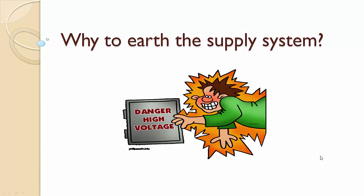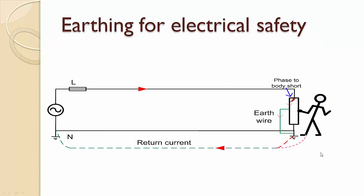In the last video we discussed how earthing electrical equipment helps protect people from electric shock. We've also seen that as part of this earthing protection, it is also necessary to earth the supply system to complete the path for the fault current.